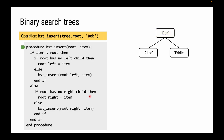Now if we want to insert Bob, we have a problem because Bob is less than Dan, so Bob should go on the left — but Alice is already there. The Dan tree is full, but the Alice subtree is not. Looking at Dan: is Bob less than the root? Yes. Does the root have a left child? Yes, so we can't place Bob here. We use the else branch and recursively call the algorithm again with a new root — the previous root's left child, Alice — and we're still inserting Bob.